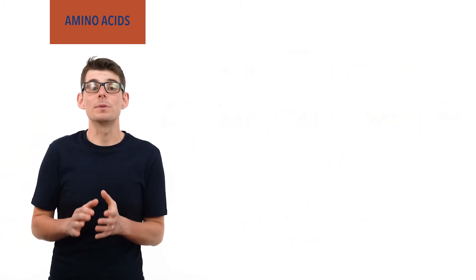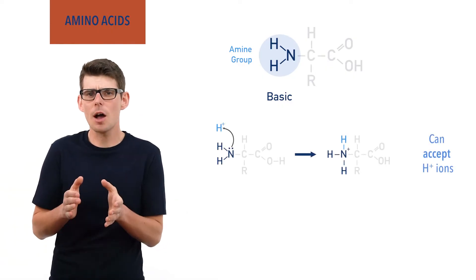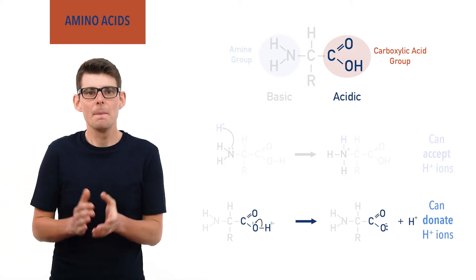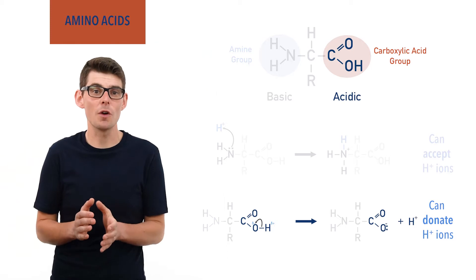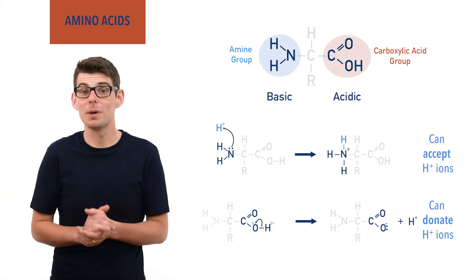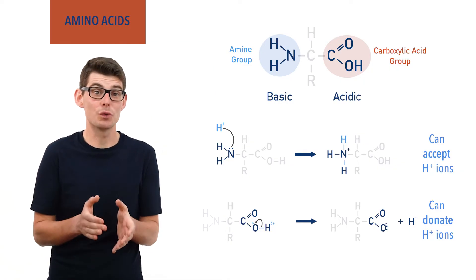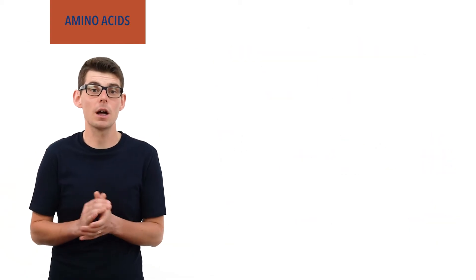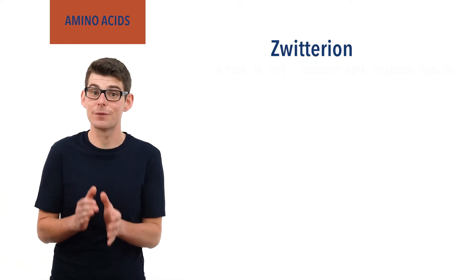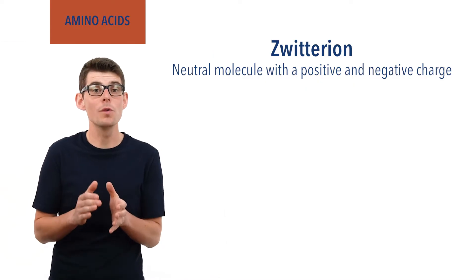As amine groups are basic, amino acids can accept H+ ions, and as carboxylic acids are acidic, amino acids can also donate H+ ions. This means amino acids have a split personality and can both accept and donate H+ ions. Because of this, they exist in solid state and in neutral solutions as something called a zwitterion — a compound that has a full negative and positive charge somewhere in its structure and yet has no overall charge.